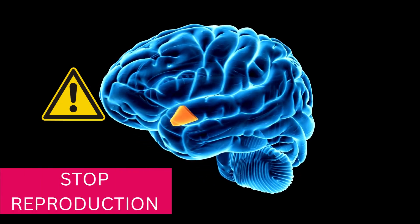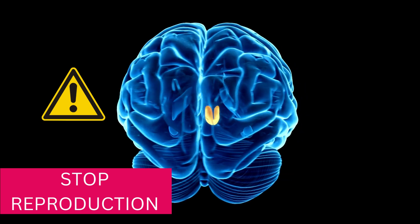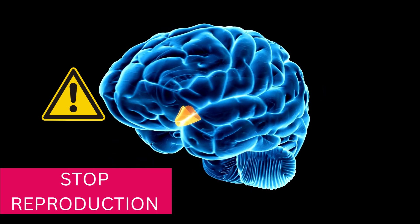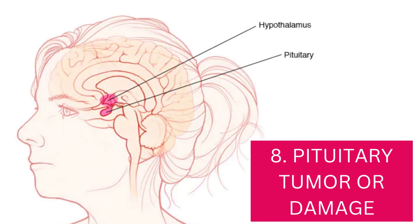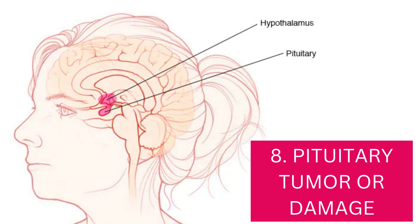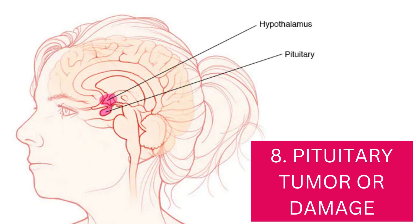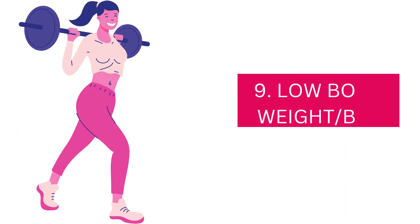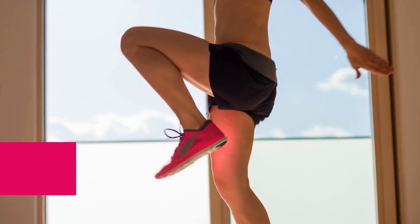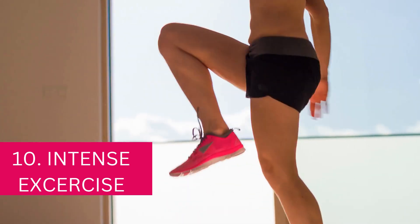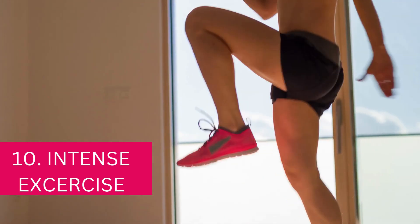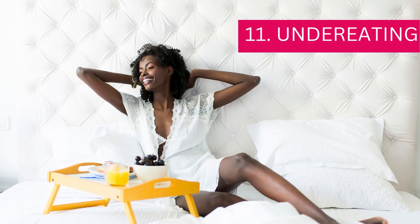There are a few other scenarios that cause anovulation similarly — by stopping the production of hormones that cause ovulation. A pituitary tumor or damage: the pituitary gland is located at the base of your brain and produces important hormones including those for ovulation, so a tumor — mostly non-cancerous — or damage will prevent their production. Low body weight or low BMI does the same thing. An intense exercise routine over very long periods will stop the production of reproductive hormones. Under-eating too — when you don't eat well enough, your body lacks the calories needed to kickstart the brain to produce the hormones needed for ovulation.